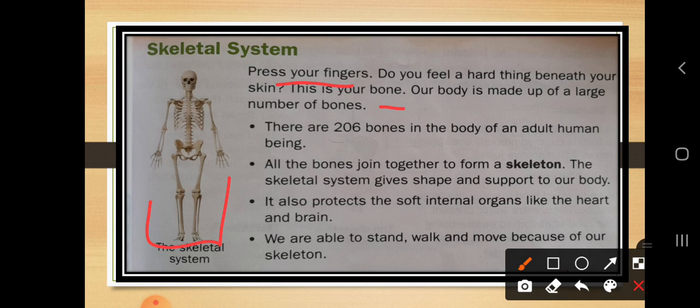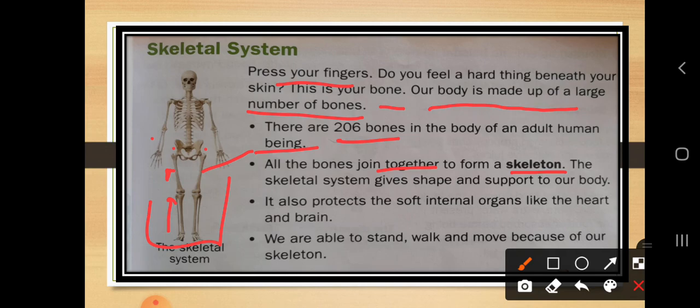How is the body made up? The body is made up of a large number of bones, and there are various types of bones. The question is: how many bones are present in an adult human being? Totally 206 bones are present in the human body.